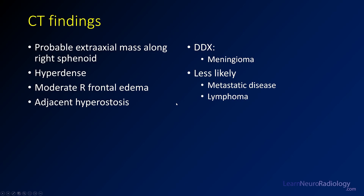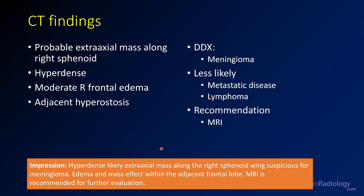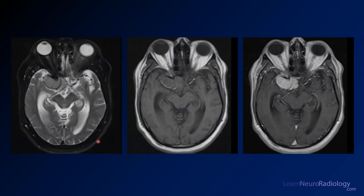Metastatic disease and lymphoma can definitely present as an extra-axial mass, but meningioma is most common. We want to recommend an MRI. In our impression, we see a hyperdense mass — likely extra-axial along the sphenoid wing, suspicious for meningioma. In this case I wouldn't even necessarily give a differential, but you can if you want. The edema and mass effect on the frontal lobe is noted, and we want to get an MRI of the brain with contrast.